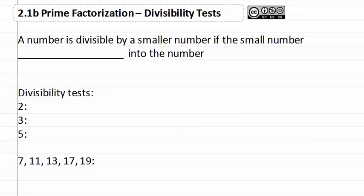2.1b: Divisibility tests. A number is divisible by a smaller number if the smaller number evenly divides into the number, which means there is no remainder when you divide. There are some easy divisibility tests for the first three prime numbers: 2, 3, and 5.